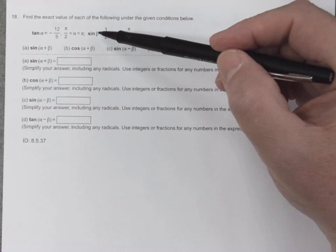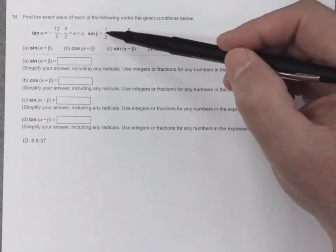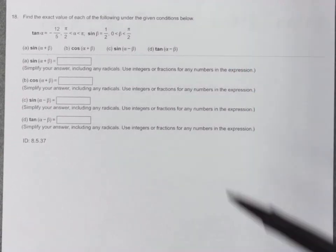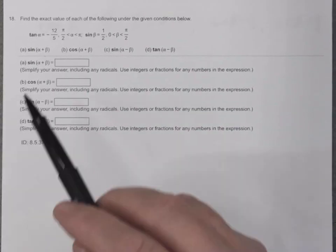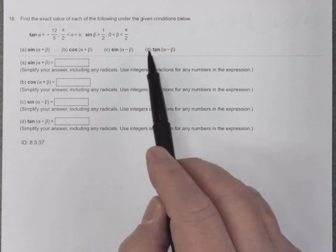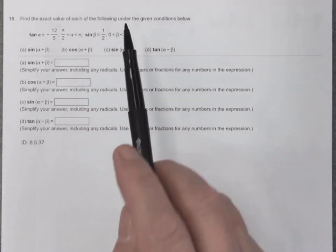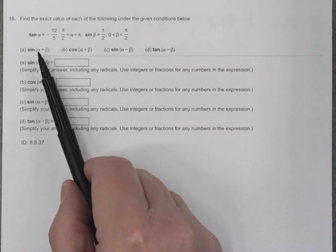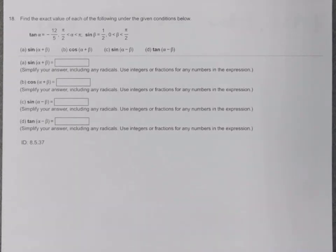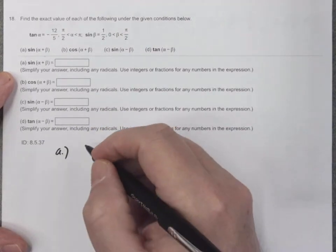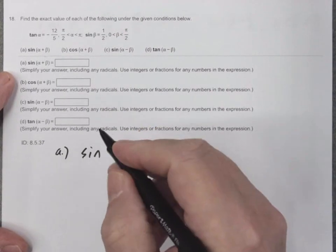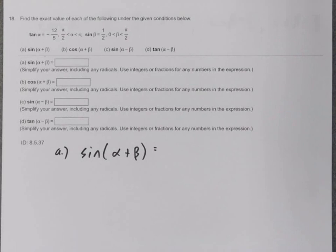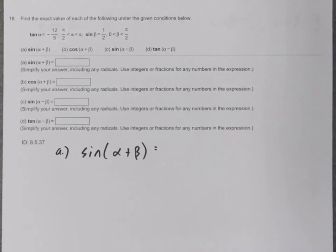Then there's a second angle beta. They say the sine of beta is one half, and beta is between 0 and pi over 2, which means quadrant 1. They ask for four trig functions where you're either adding or subtracting these two angles. I'm going to start with part A, going to the formula sheet and writing out the formula for the sine of the sum of two angles.